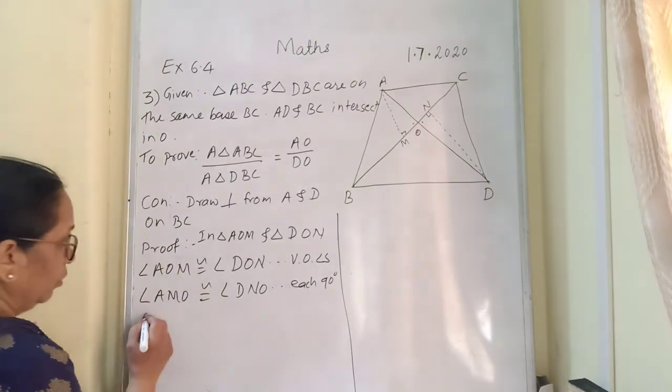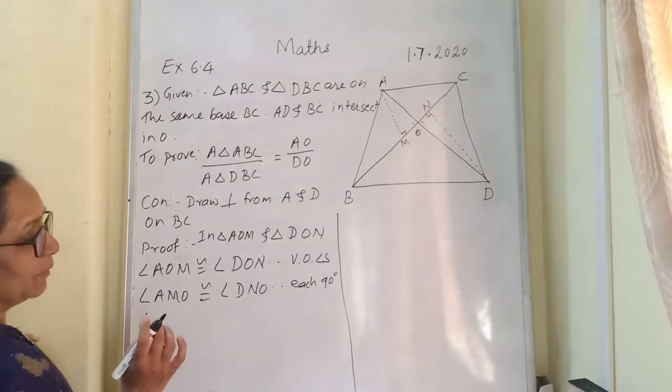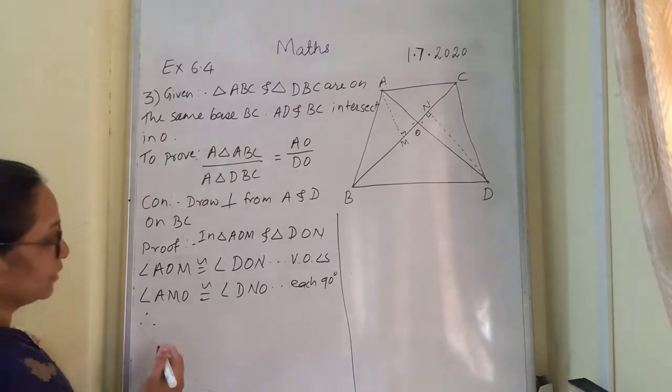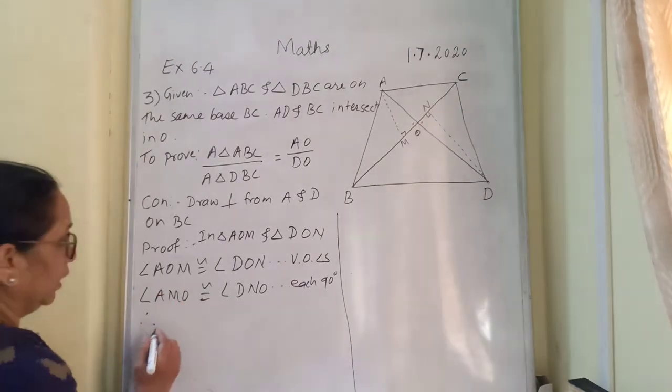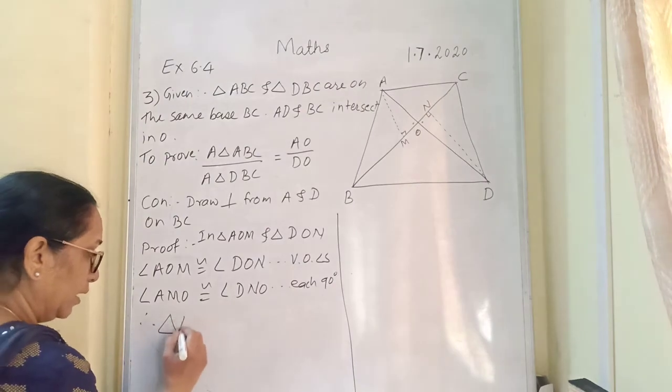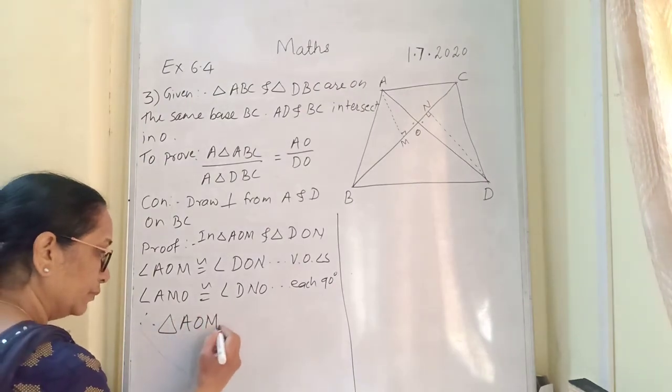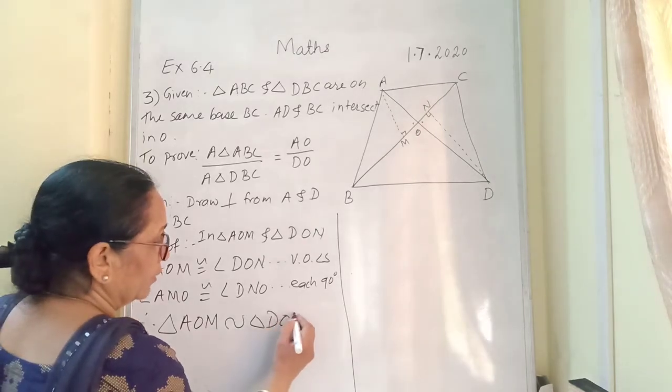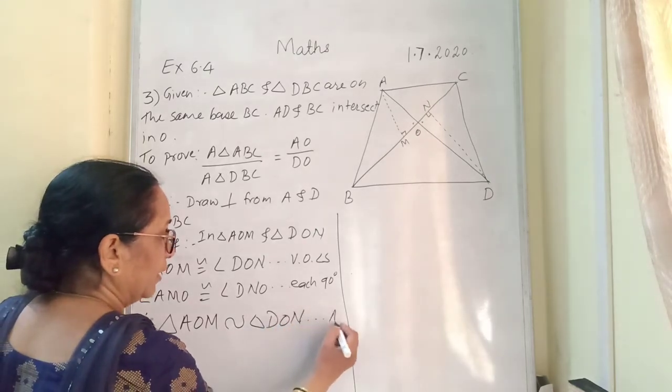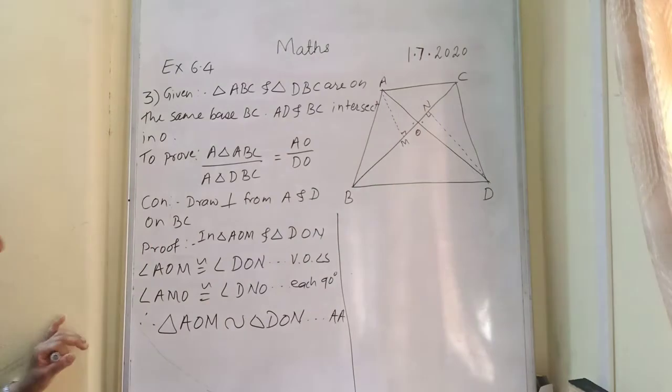Therefore, now two angles are congruent, therefore triangles have to be similar. So triangles are similar. Therefore triangle AOM is similar with triangle DON. And reason will be AA test of similarity. Correct?